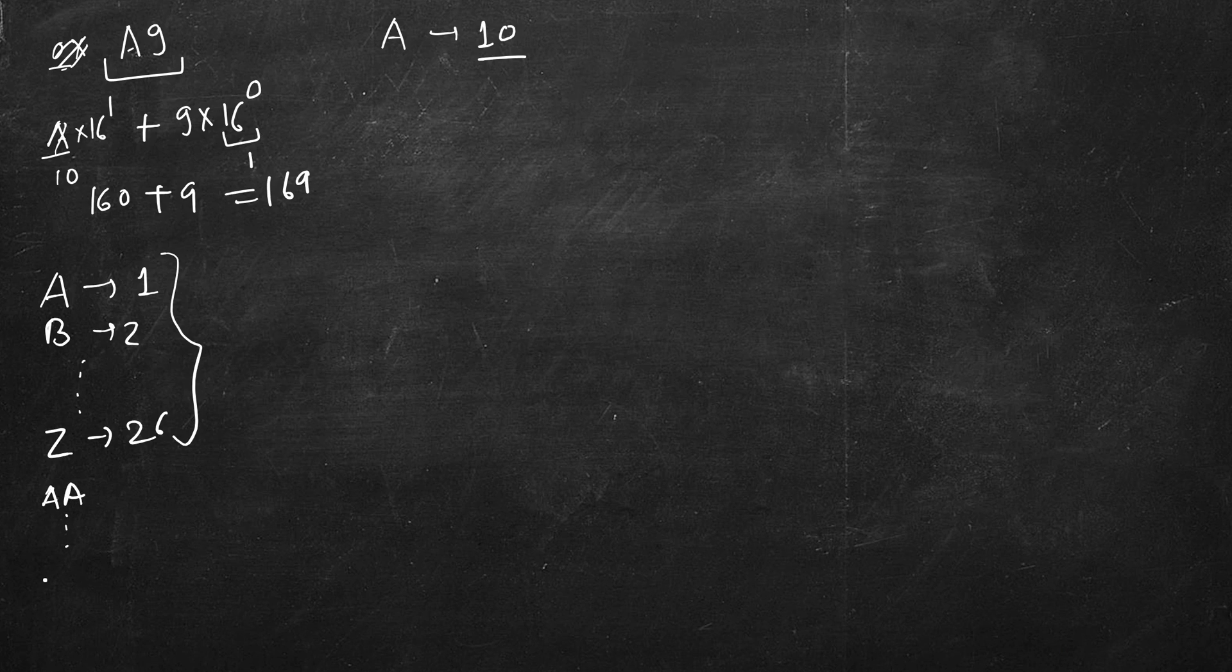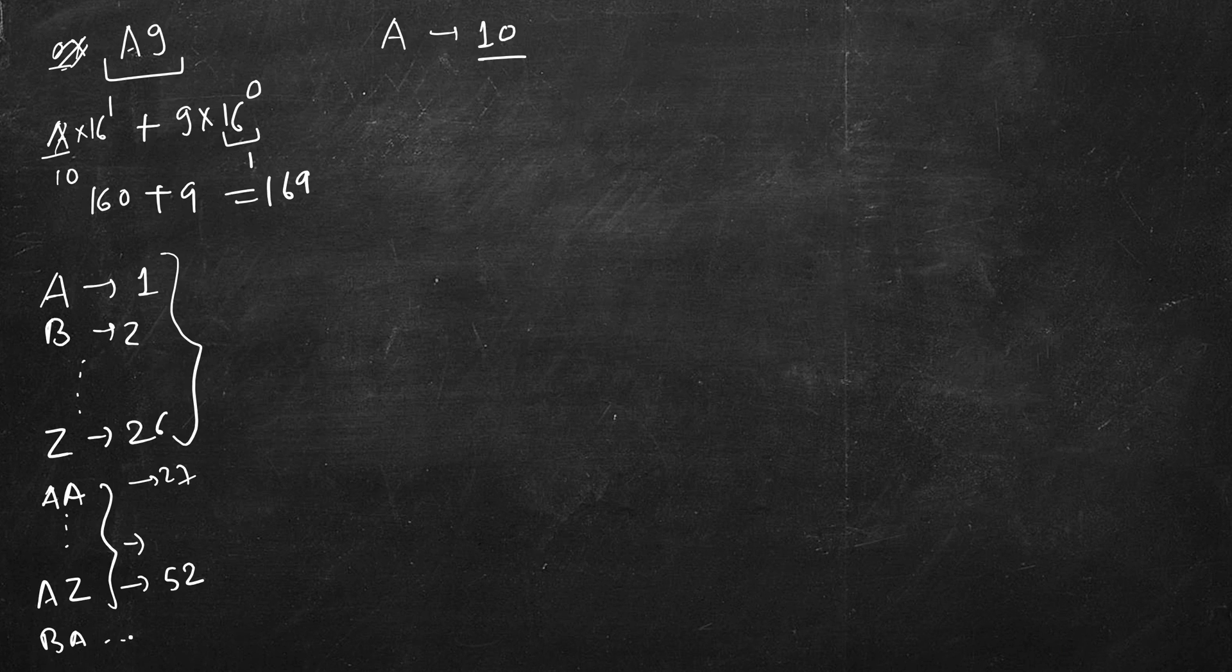AA to AZ will be again 26 characters, so this is 27 and this is 52. Then we will have BA to BZ, and again we will have 26, all the way up to ZA to ZZ.